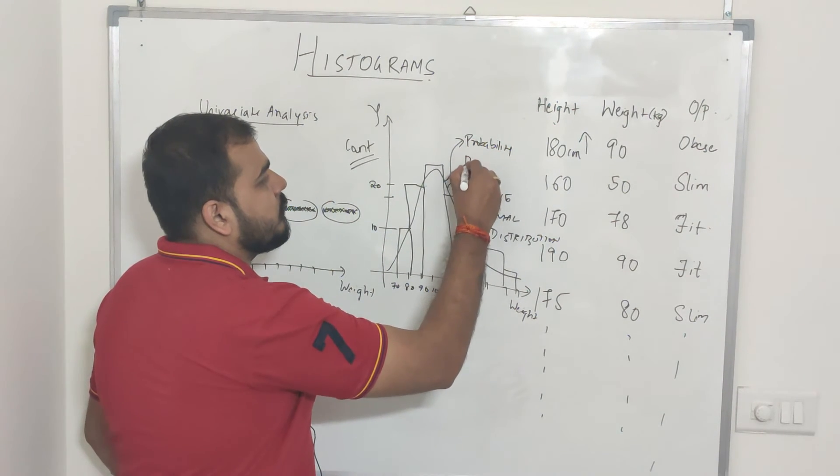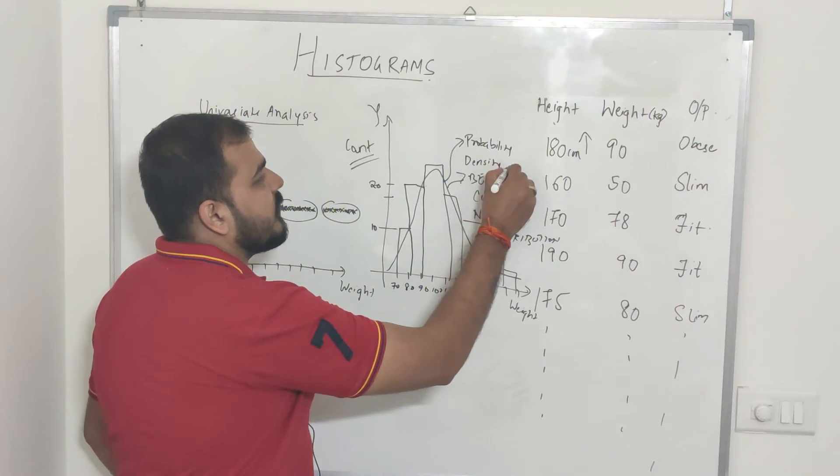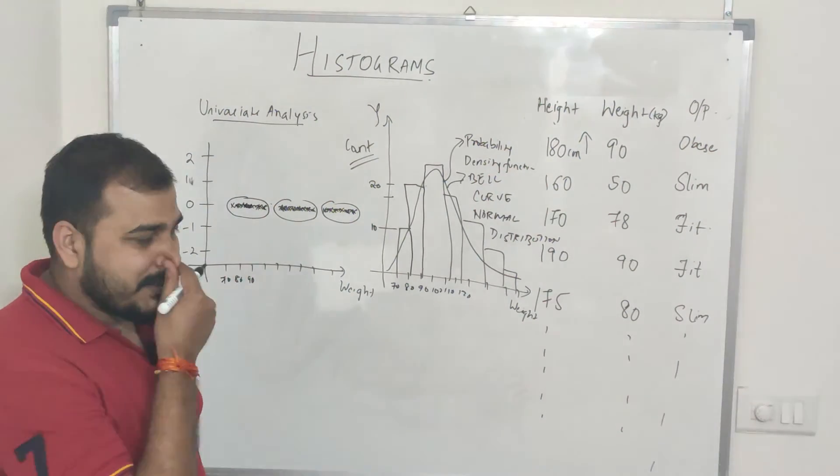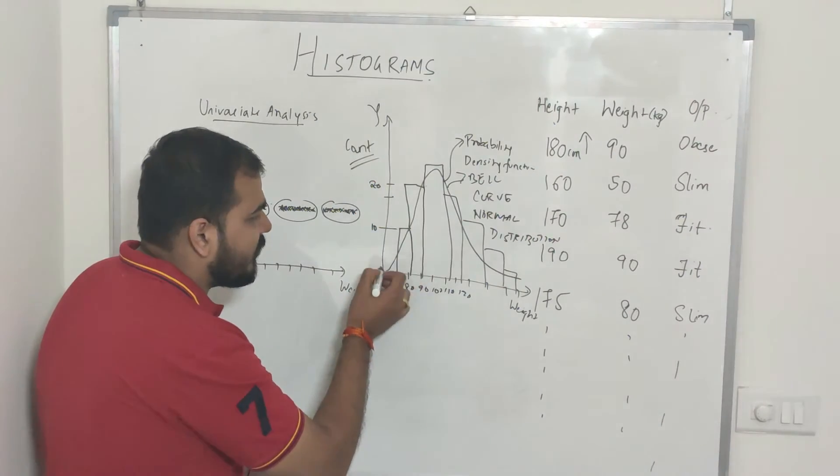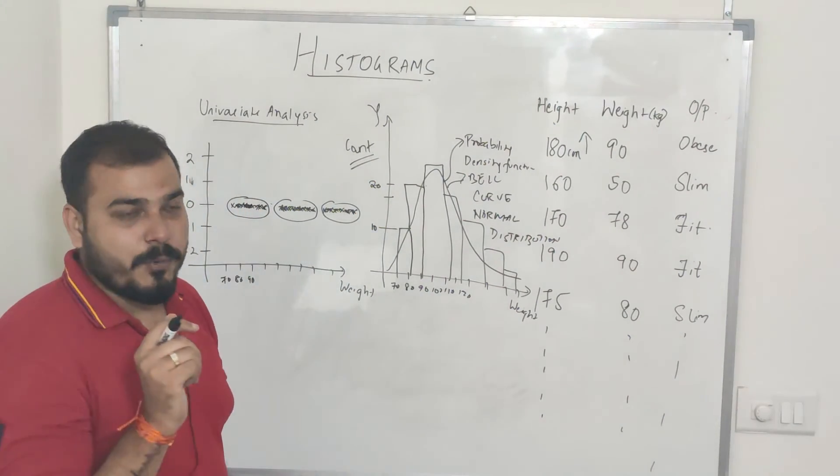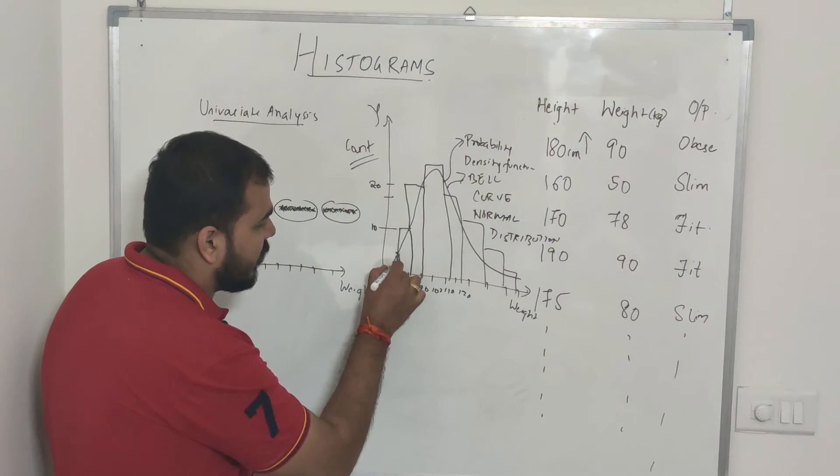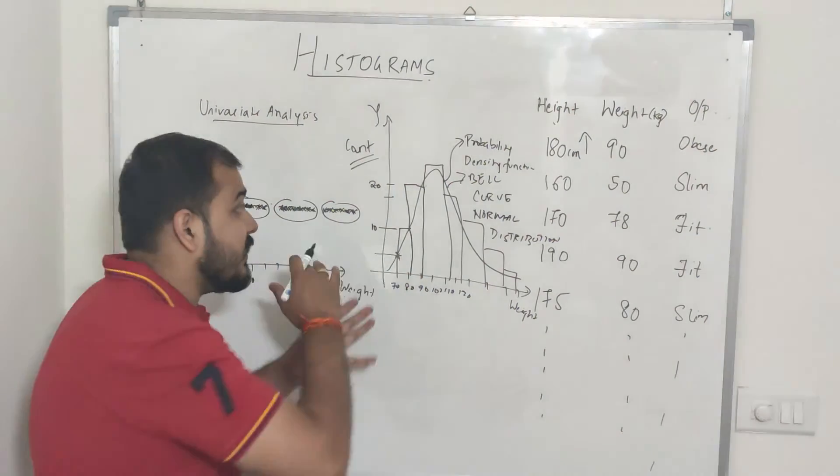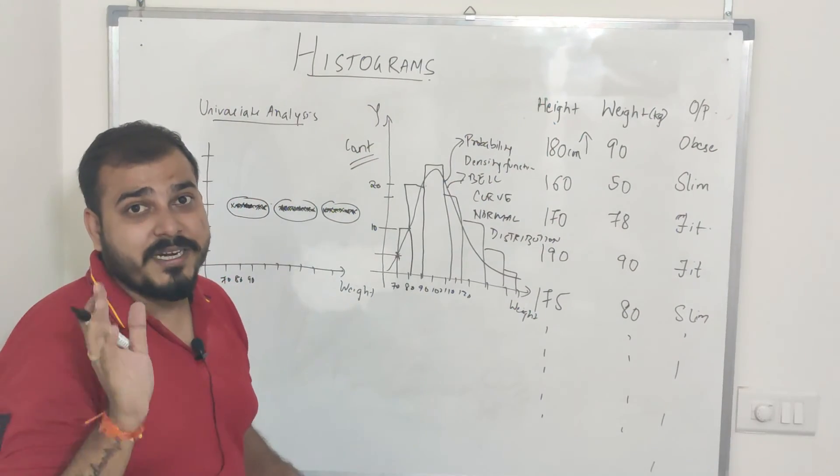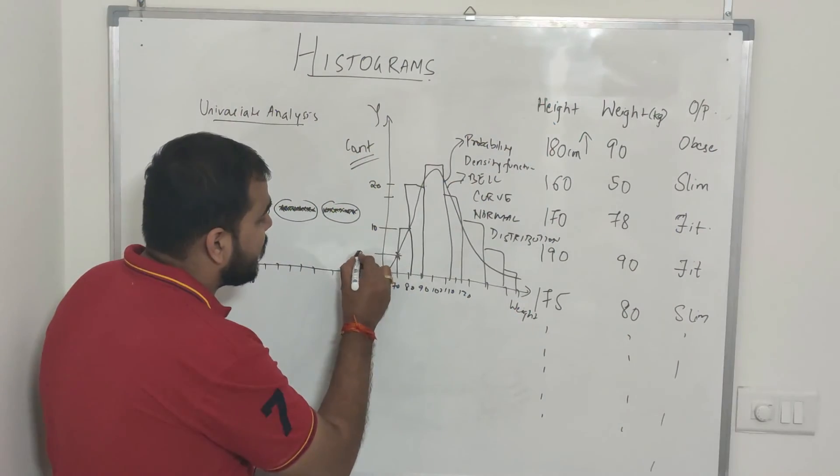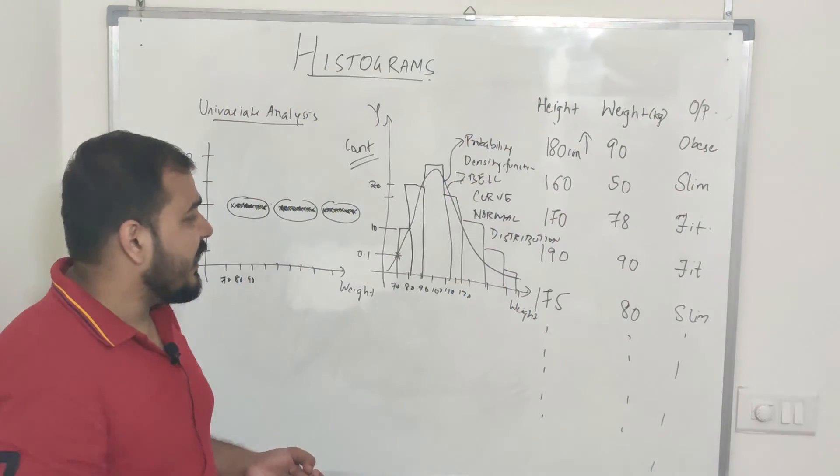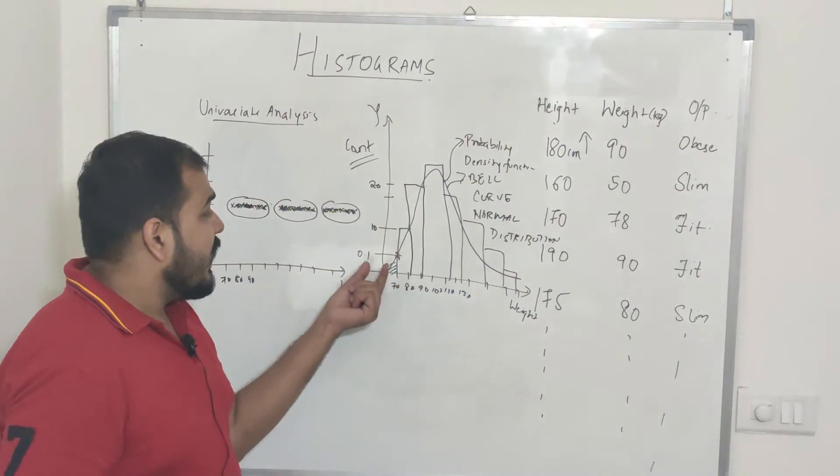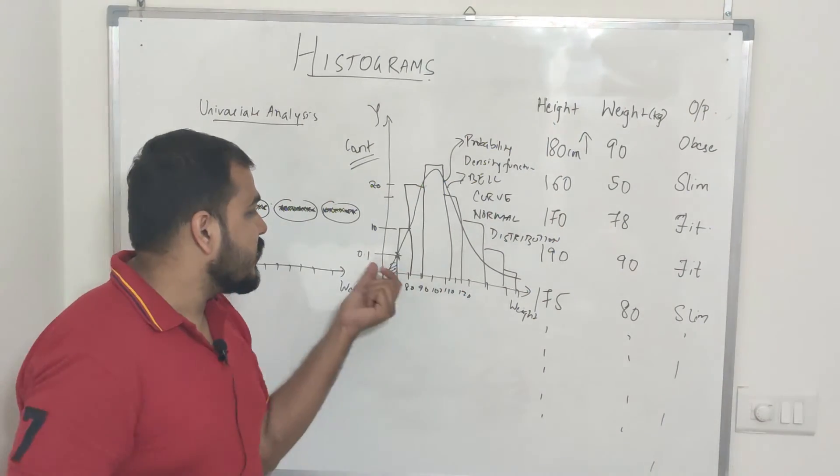When I convert this into probability density function, it basically indicates what percentage of the population are present at each and every point. Suppose at this particular point, if I'm converting this into a PDF function, then here you'll be having some values like 0.1. This basically indicates that at this point of time, all these values that are there, it is somewhere around 10 percent of the total distribution.